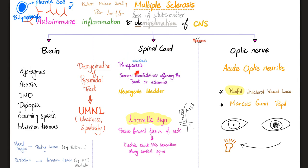Spinal cord: you get paraparesis or weakness, sensory manifestations affecting the trunk or extremities, neurogenic bladder, and the famous positive Lhermitte sign. You, as a doctor, passively flex the patient's neck forwards, and the patient will feel electric shock-like sensations shooting down the spine. The optic nerve is toast. Acute optic neuritis: painful unilateral visual loss. Contrast that with central retinal artery occlusion—painless unilateral loss of vision.